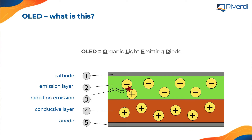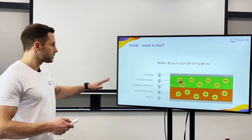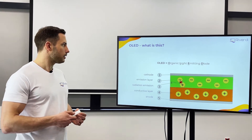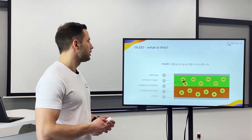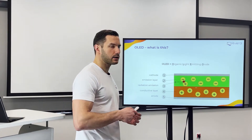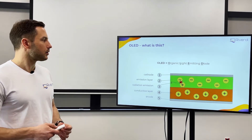OLED is an abbreviation for Organic Light Emitting Diode — like an LED but based on organic materials. The light emission works pretty much the same as with an LED; it's not silicon-based but rather organic-based layers. The physics is like any LED diode or laser: electrons recombine, moving to higher energy states and then dropping to lower levels, emitting light.